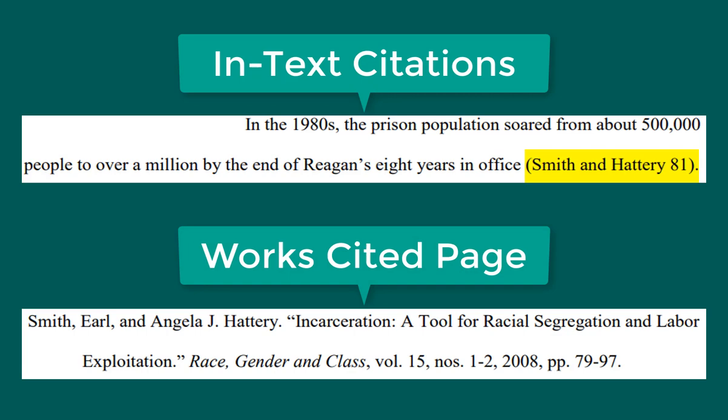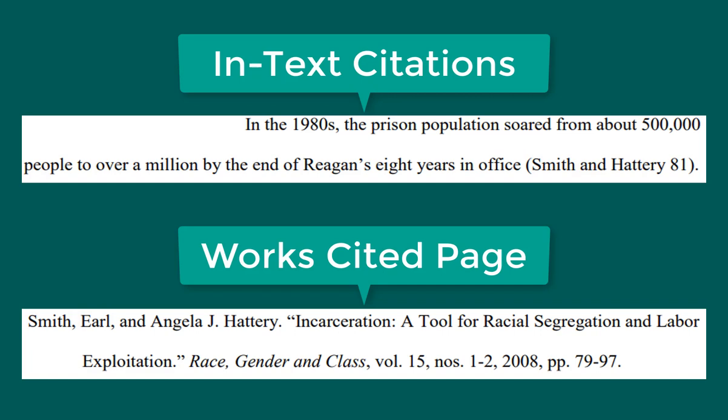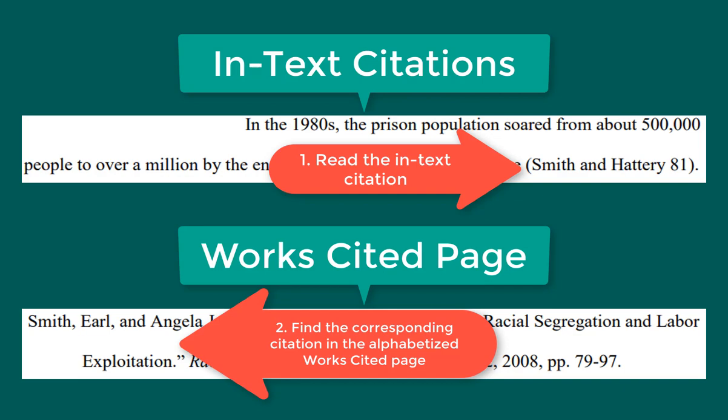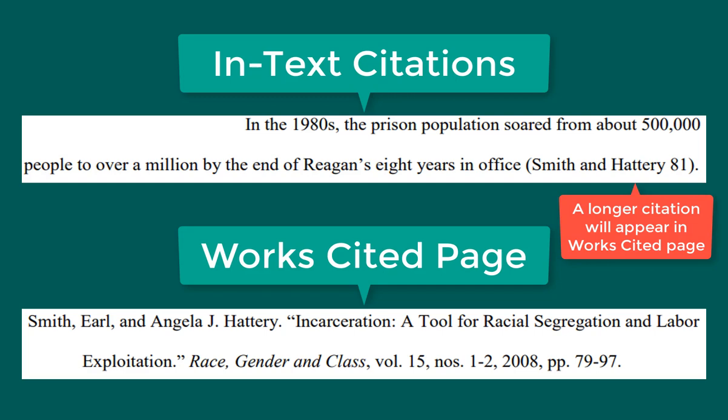While in-text citations contain the author's last name and page number, the citations in the Works Cited page contain more information. The first item in an in-text citation should match the first item in the full citation in the Works Cited page. Anyone reading your paper should be able to easily see the sources you used by first looking at an in-text citation and then finding the corresponding citation in the Works Cited page. Each source cited as an in-text citation must appear in your Works Cited page, and each source in your Works Cited page must appear as an in-text citation in your paper.